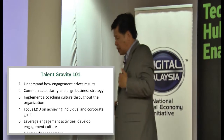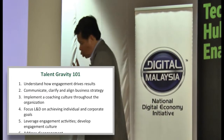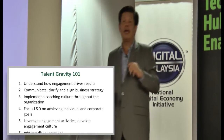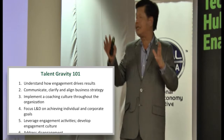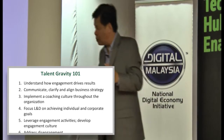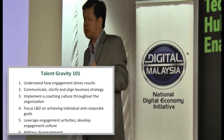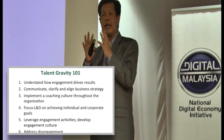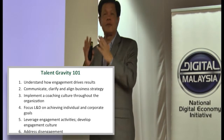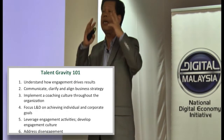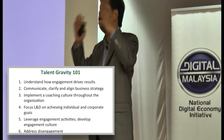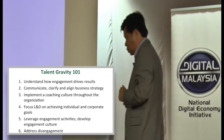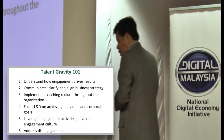Two: communicate, clarify, and align business strategy. Some of the speakers already spoke about this — you need to ensure that employees are aligned in terms of your thinking, that they fully understand what the organisation wants to do.